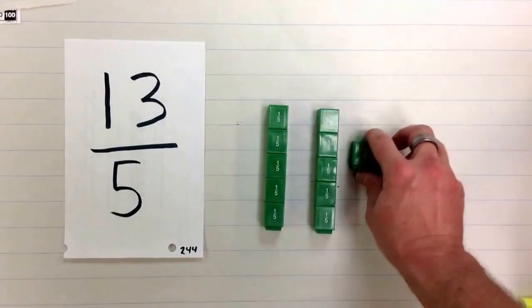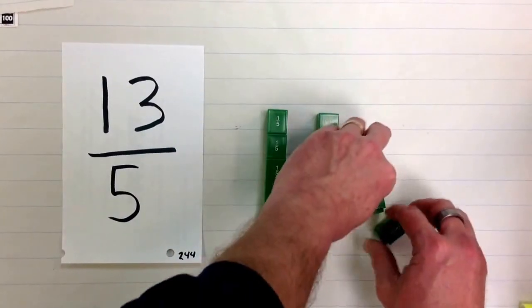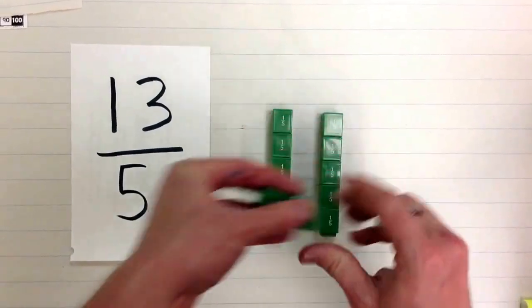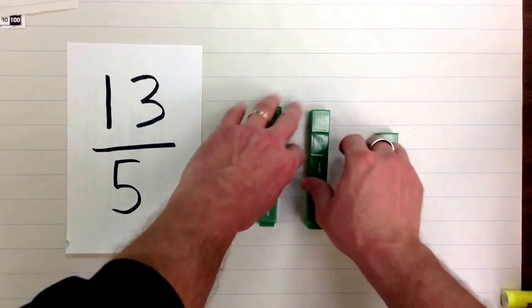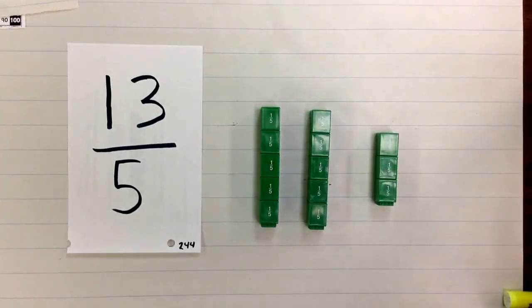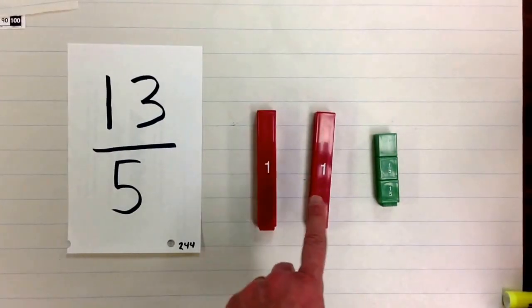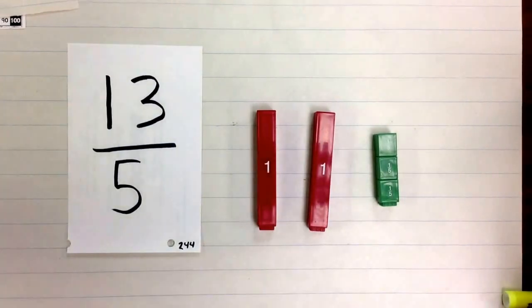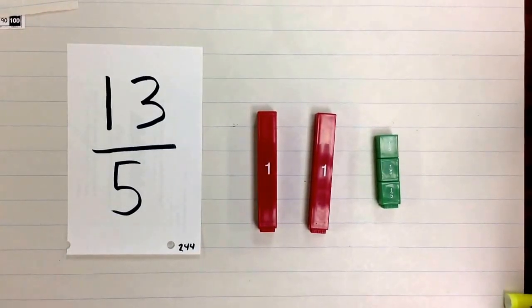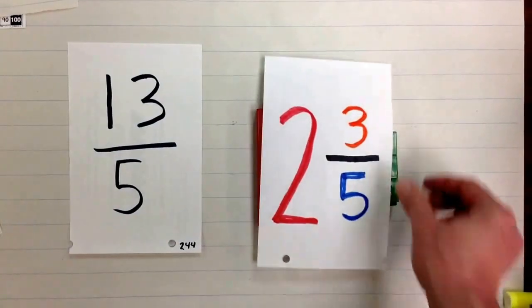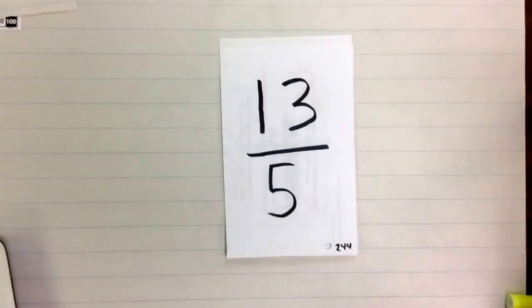We have three-fifths left over. If we did that as a mixed number, we would have, basically, two whole and three-fifths, which would look something like this.